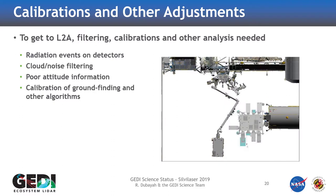The third aspect of this is getting correct attitude information. Most of us want to be able to use the GEDI data with other data such as Sentinel or Landsat, or you want to get it over your field plot. Right now our geolocation is about 10 meters. It should go down to about 7 meters, but getting to that point can take a long time.